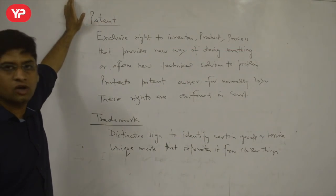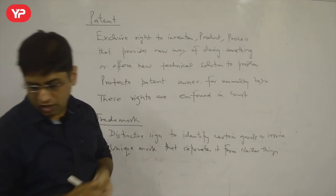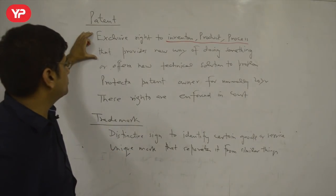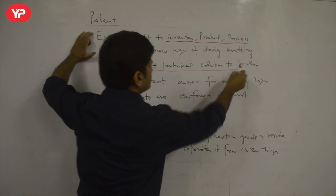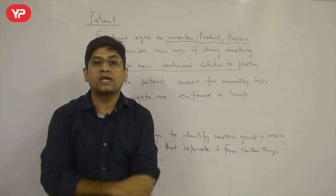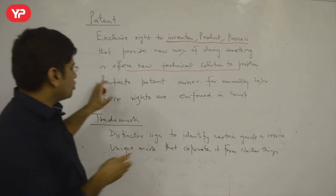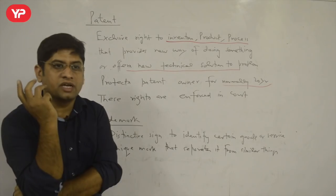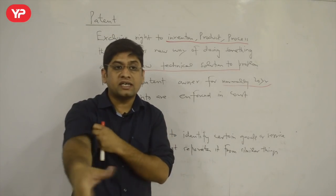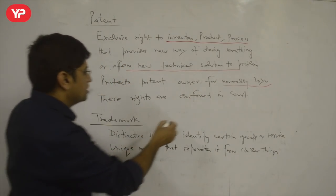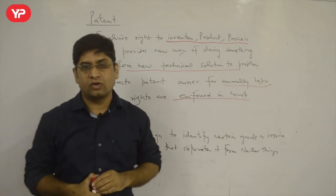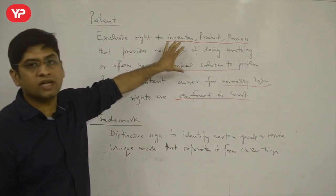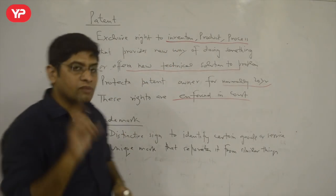Now, what is a patent? If you have made an invention — a product or a service — you can protect that invention. You get a patent on it. If you have created something that provides a new technical solution, like a new type of machine, you can get it patented. The patent owner gets the right, and normally for 20 years no one else can make that machine. For example, if I make a new type of fridge using new technology, with a novel solution, I can get that technology patented. If someone violates it, you can take them to court.